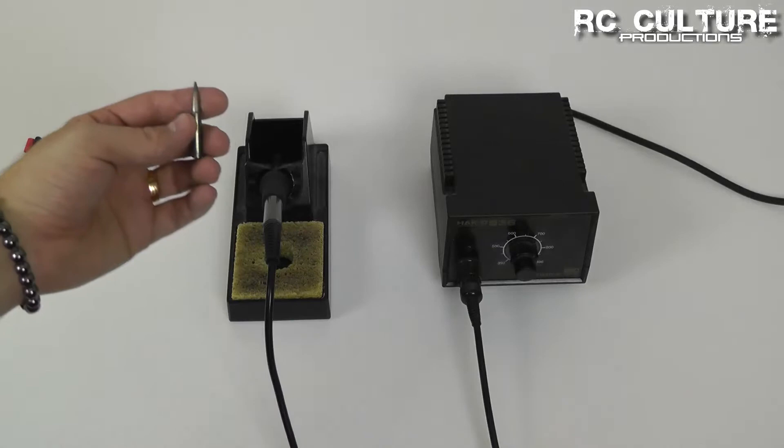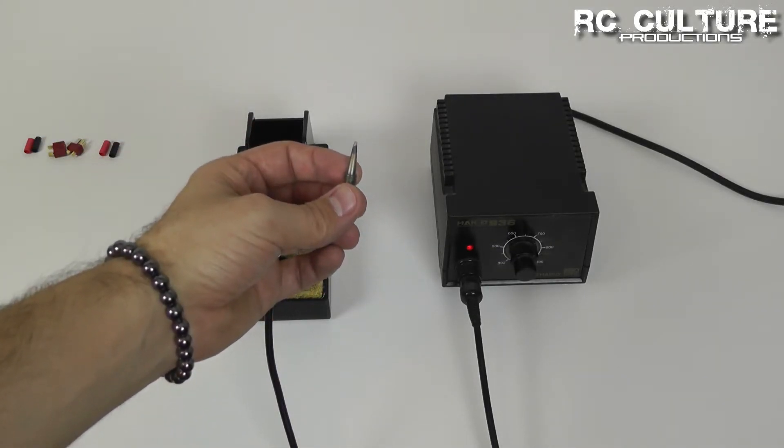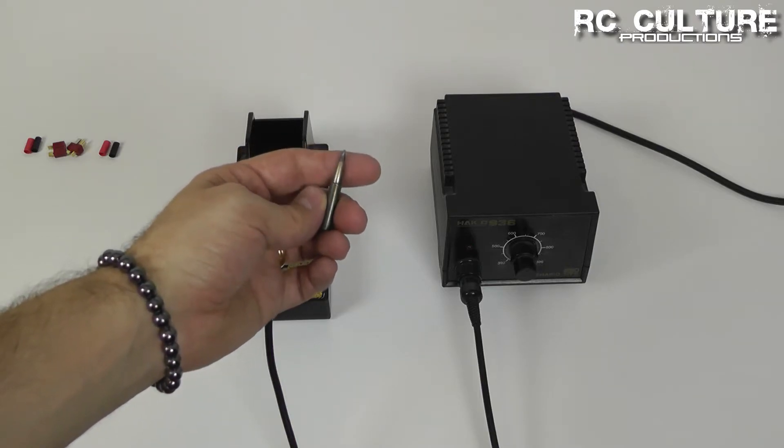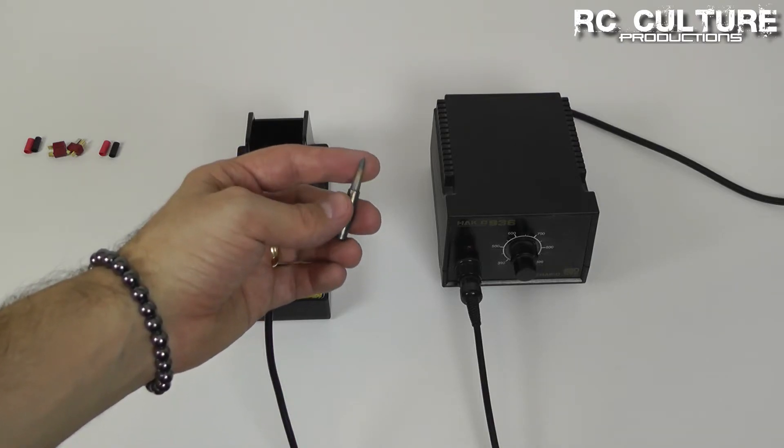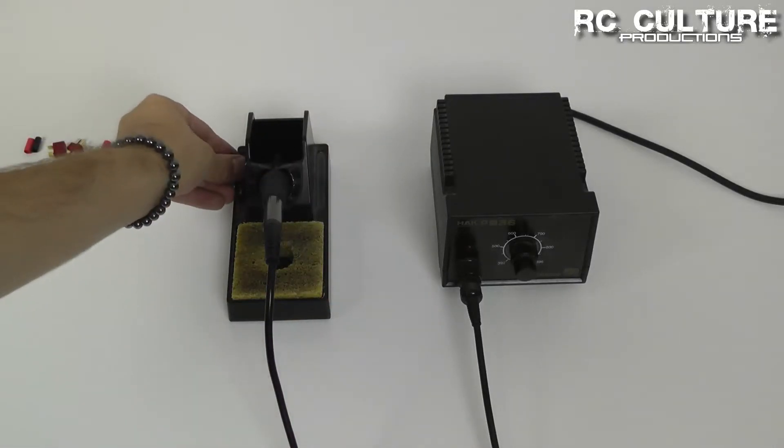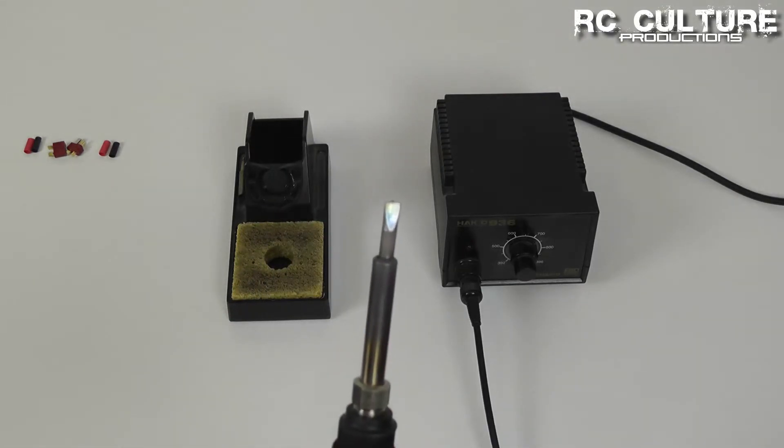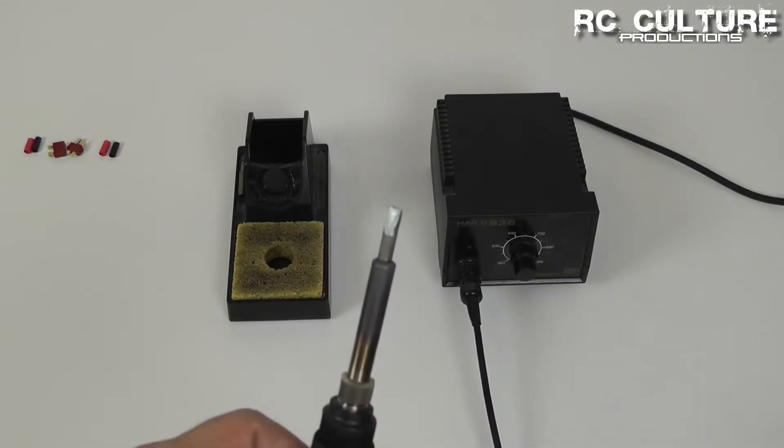And with our soldering station, we have two different tips here. This is just a point tip, which is good if you're doing some detail work. Typically nothing that you'll be doing with an RC would need this type of tip, but it comes with the Hakko. And we have an optional tip, which is what we will typically use. You can see here is a lot like a flat blade screwdriver.